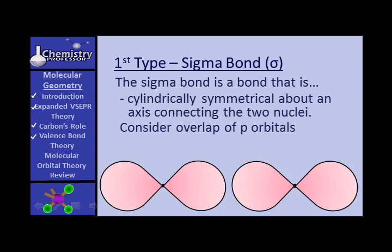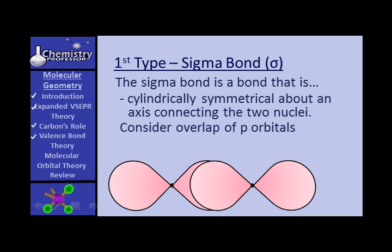Now suppose you have overlap of two P orbitals. There are two different ways they can overlap, but let's look at the end-to-end overlap. They collide, they overlap, and you can see that overlap. They form that bonding area — that's the area of greatest electron density. The electrons like being between those nuclei. That bond is cylindrically symmetrical about an axis connecting the two nuclei. That is a sigma bond.